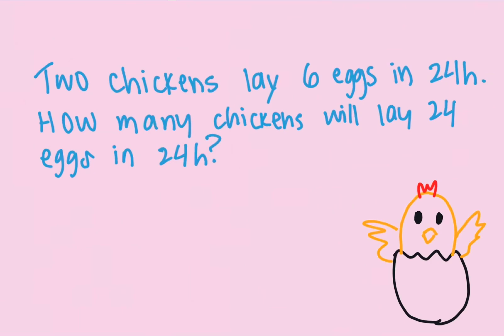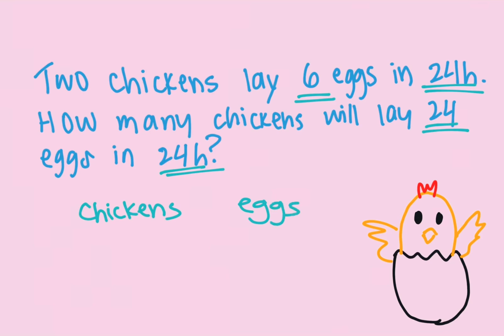There are two chickens and they lay six eggs in 24 hours. How many chickens will lay 24 eggs in 24 hours? To solve this kind of question, first we see they're asking about chickens, so we write chickens. We're also talking about eggs, and we have the same period of time — 24 hours in both cases.